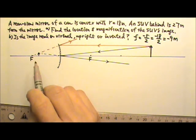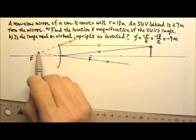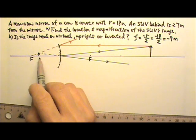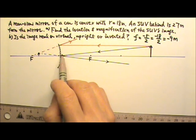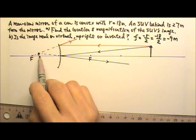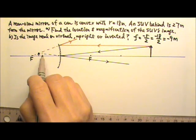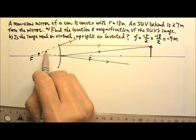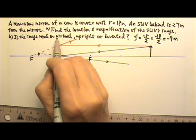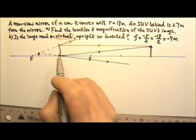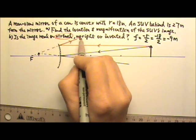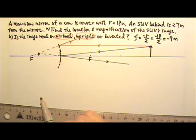It may be hard to pinpoint the location of the image, but we know the image is behind the mirror. It is formed by the ray extensions, so the image must be virtual. And we can see that it is upright.